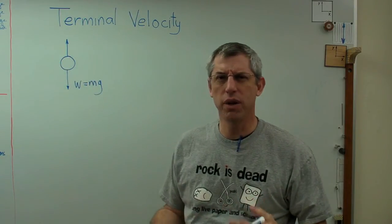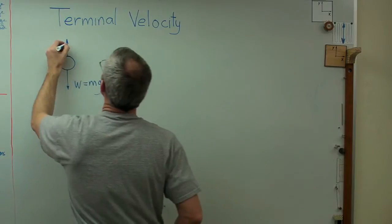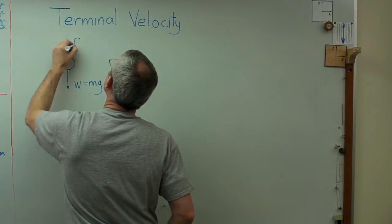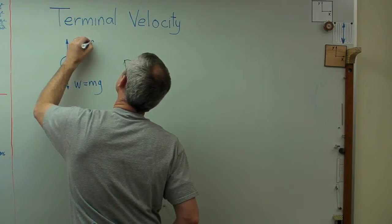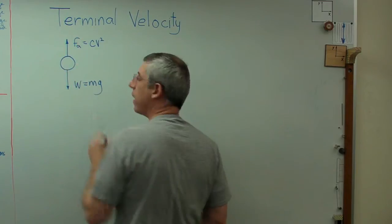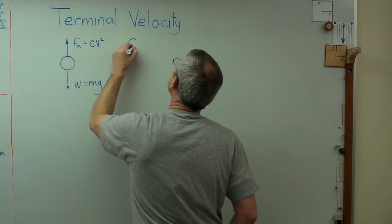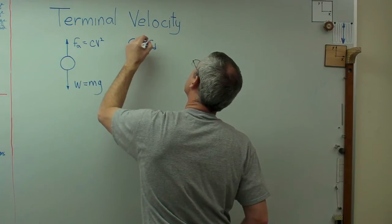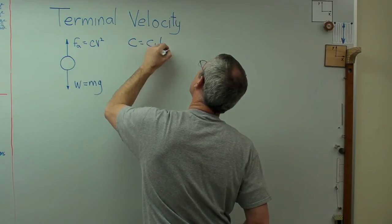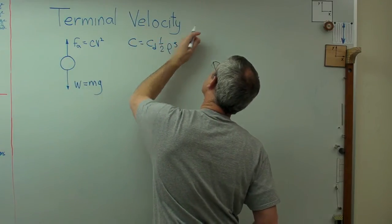Well, how do you describe aerodynamic force? It turns out it's pretty simple. The aerodynamic force is some constant times v squared, square of the velocity. And that constant is written out this way, cd one half rho s, where cd is the drag coefficient.